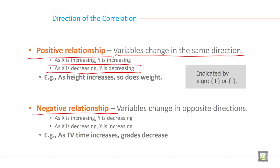Negative correlation: Variables change in opposite directions. Example: if X is increasing, Y is decreasing. And if X is decreasing, Y is increasing. Example: as TV time increases, grades decrease.